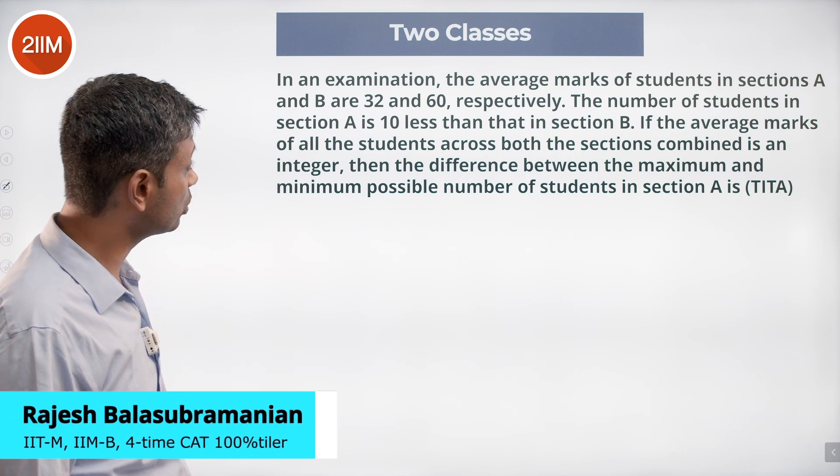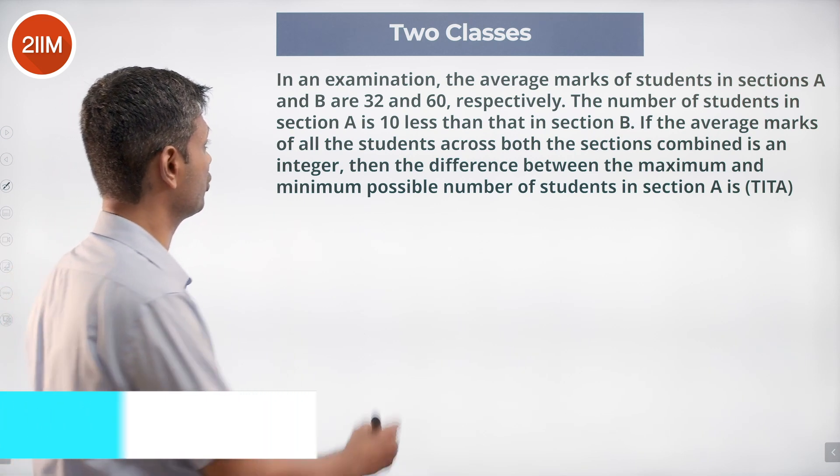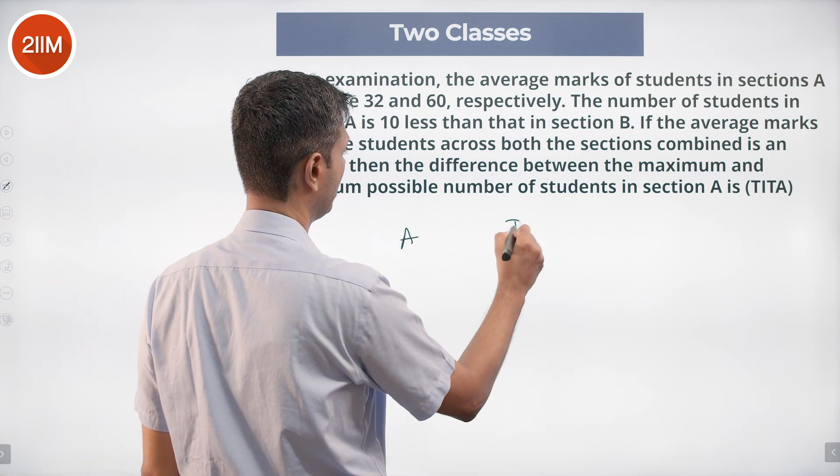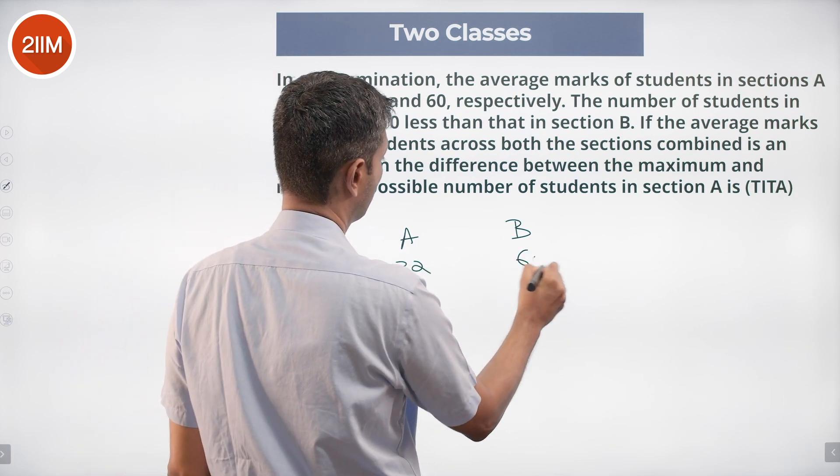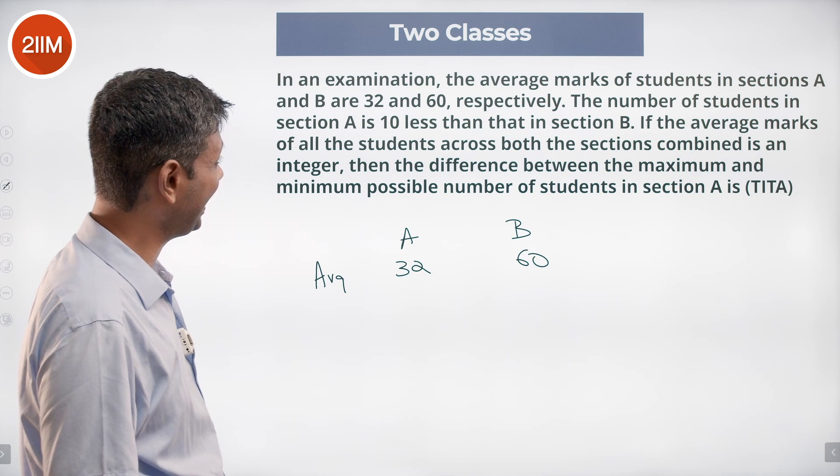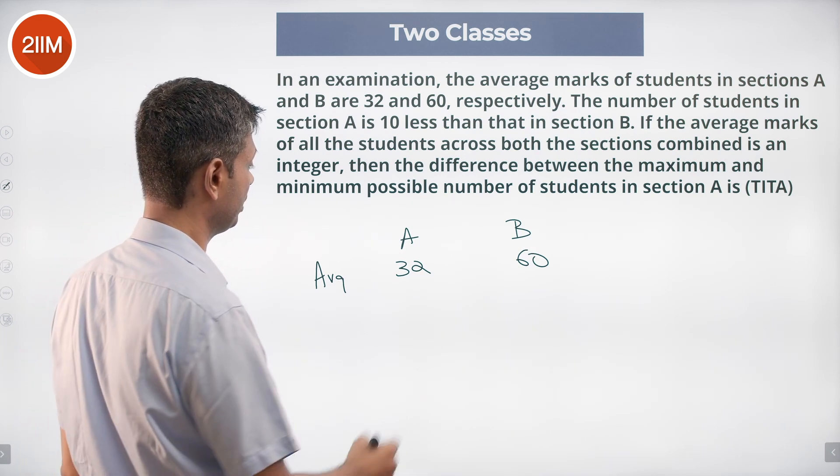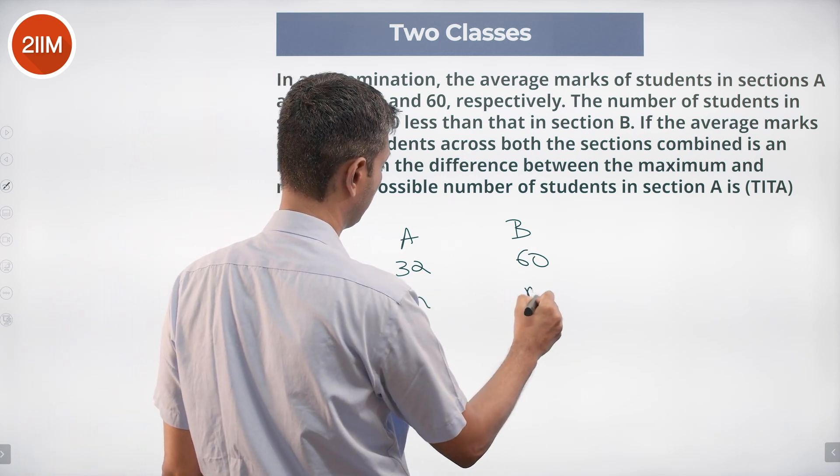In an examination the average marks of students in section A and B are 32 and 60 respectively, which is 32 and 60. The number of students in section A is 10 less than that in section B, so n and n plus 10.